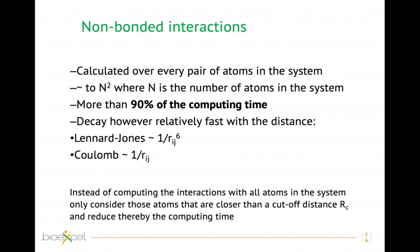If we have a system with around N number of atoms, we have to calculate N squared interactions. Those calculations are one of the most time-consuming parts of the simulation, taking almost 90% of the computational time.